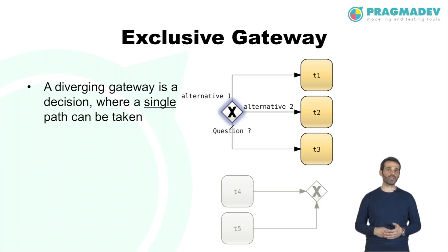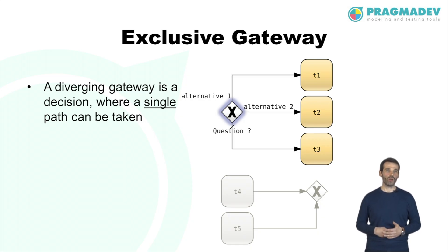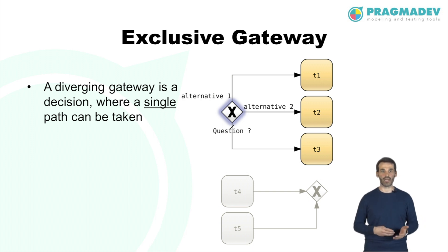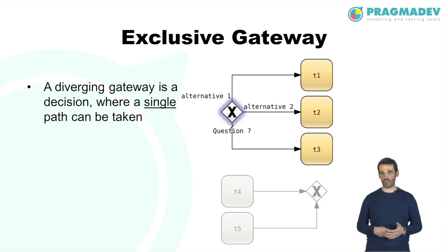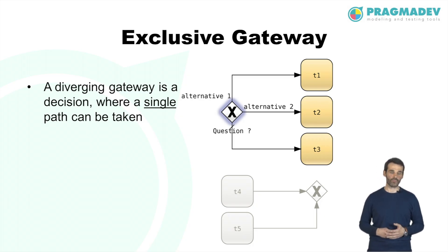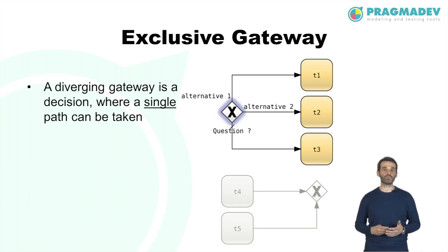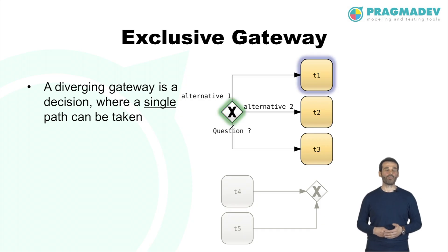A diverging exclusive gateway, or decision, creates alternative paths within a process flow — only one path can be taken. A decision is like a question asked at a particular point in the process, with a defined set of alternative answers, each associated with an outgoing sequence flow. In the example, either alternative 1 or 2 can be true, but not both. If neither is true, the default path leads to T3. When a path is taken, all other paths are no longer valid.